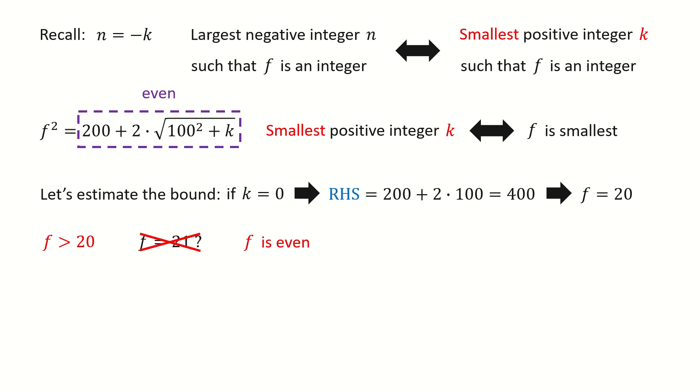These two requirements indicate that the smallest positive integer for f is 22. Then we plug in 22 to that equation so we can solve for k. Note for our n, which is defined as minus k, so we got this final answer.